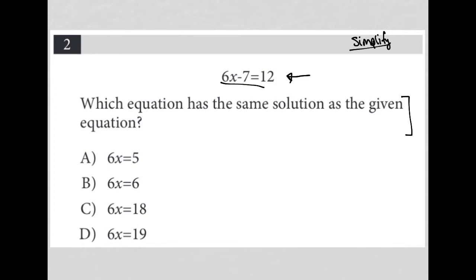I'm glancing down at the answer choices and I notice that these answer choices are not solving for x. They seem to be solving for 6x, or isolating the 6x.